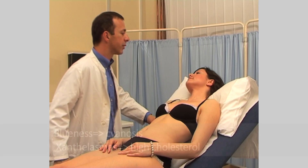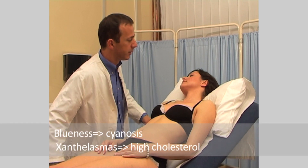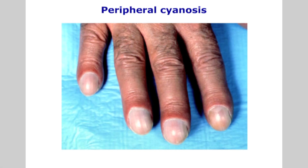Inspect the face for evidence of peripheral or central cyanosis. Blueness or cyanosis signifies poor tissue perfusion or the build-up of deoxygenated blood. Peripheral cyanosis is best observed on the tips of their nose and ears, and also the fingers and nail beds.